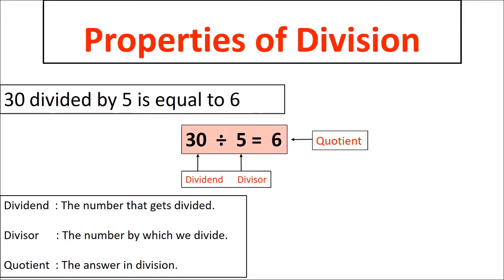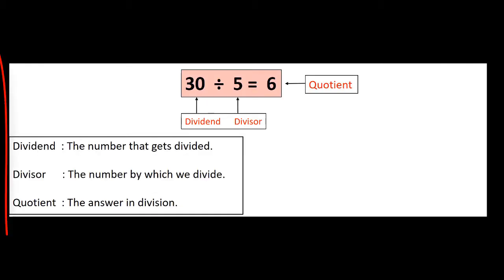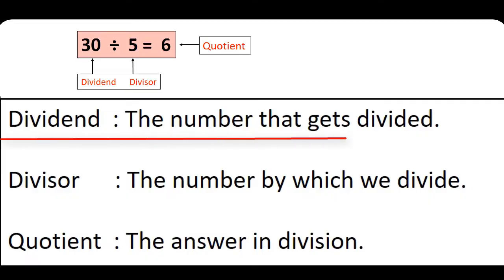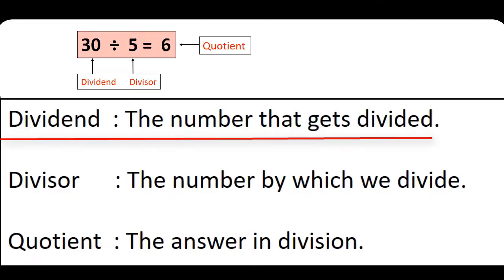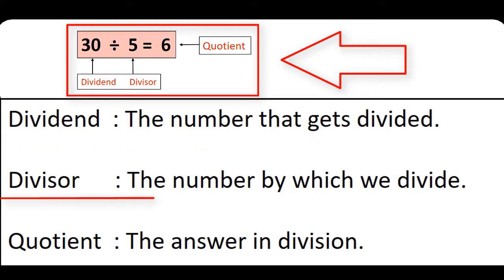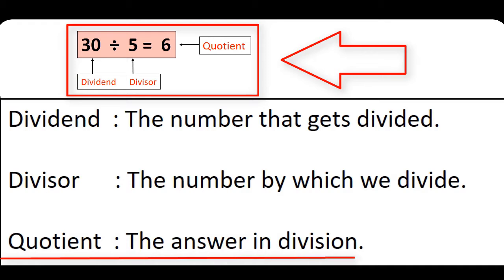Let me explain the properties of division. This is our division fact: 30 divided by 5 is equal to 6. Here, 30 is called the dividend — the number that gets divided. 5 is called the divisor — the number by which we divide. And 6 is called the quotient — the answer in division.